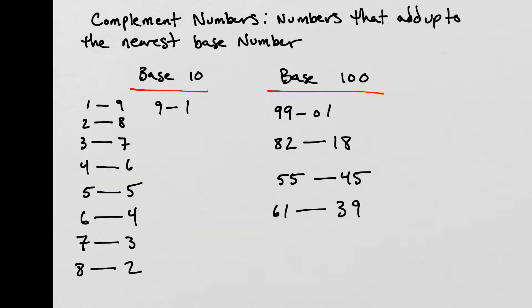Let's talk about complement numbers. A complement number is two numbers that add up to the nearest base number. For example, in base 10, we can say that 1 is the complement of 9, 2 is the complement of 8, 3 is the complement of 7, and 4 is the complement of 6. These two numbers are going to add up to the nearest base number, which in this case is base 10.